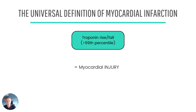To emphasize that point, let's go through the universal definition of myocardial infarction. This is the fourth universal definition, and we can see that troponin is central to the diagnosis of MI — it's an essential criterion. You have to have a troponin rise or fall with at least one level above the 99th percentile upper reference range to diagnose an MI.